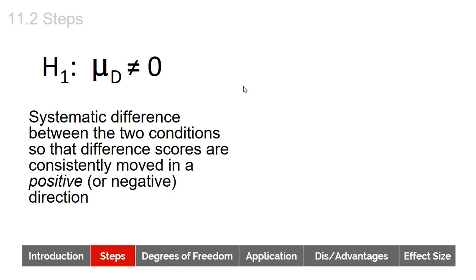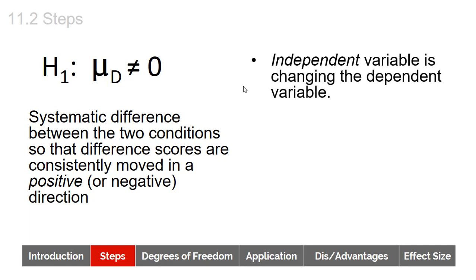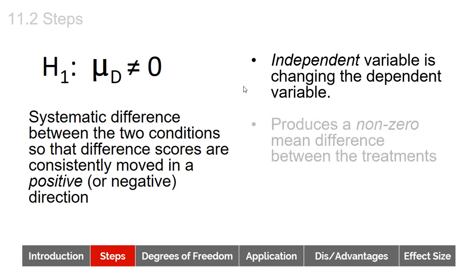The alternative hypothesis says there is a systematic difference between the two conditions. The scores are consistently moving in either a positive or a negative direction — all going in the same direction. So the difference scores are not equal to zero. The independent variable — whatever happened between the pretest and posttest — is changing the dependent variable, and that change produces a non-zero mean difference between the treatments. In the next video, we're going to start talking about degrees of freedom for the repeated measures t-test.